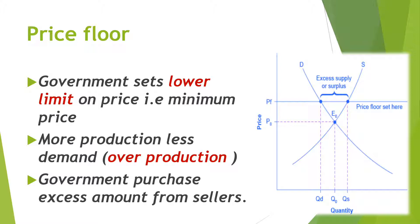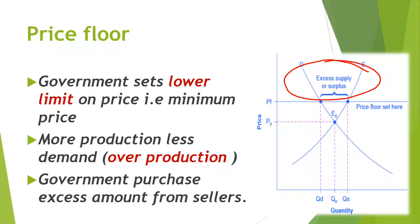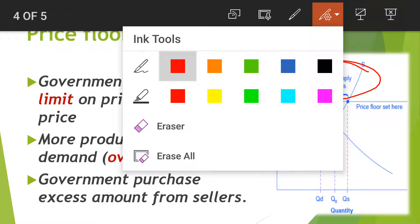The government effectively says: sell to me at this minimum price. By increasing demand in this way and controlling excess supply, the government manages the market. In the price ceiling case, the government controlled a high price by capping it, and in the price floor case, it supports a minimum price to protect producers.